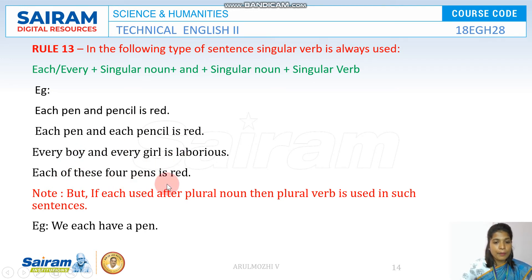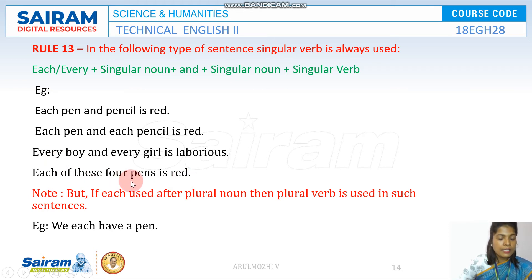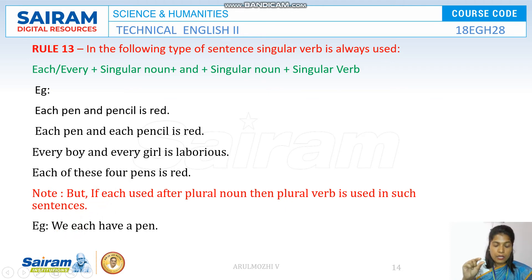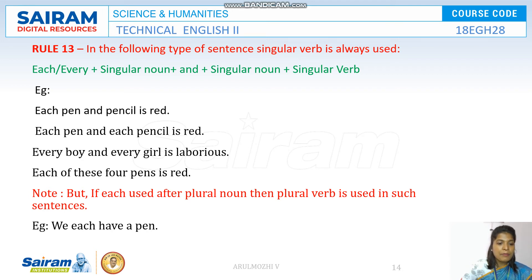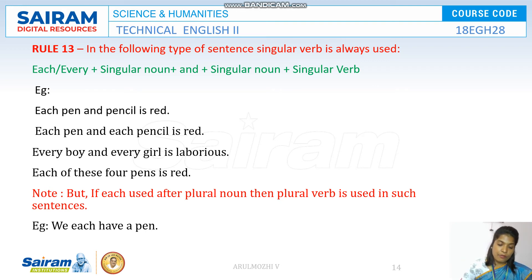However, if a plural noun or plural pronoun comes before 'each,' then it signals a plural subject. For example: 'We each have a pen.' 'They each have a pen.' If you have a plural subject before 'each' or 'every,' then you must use a plural verb.